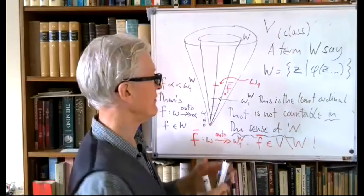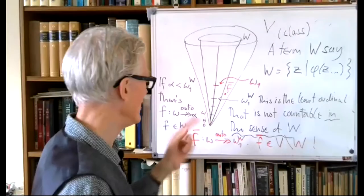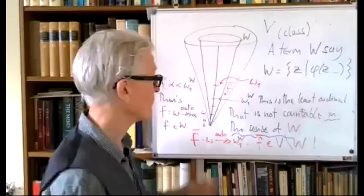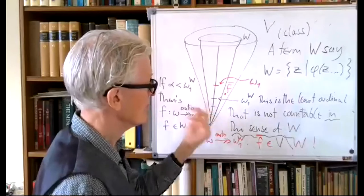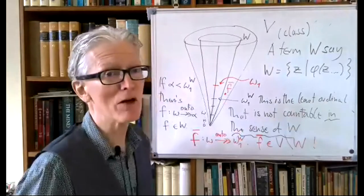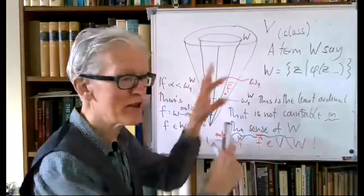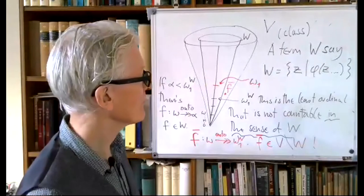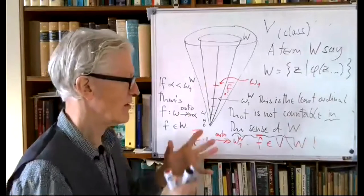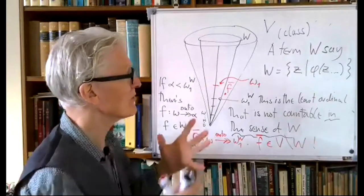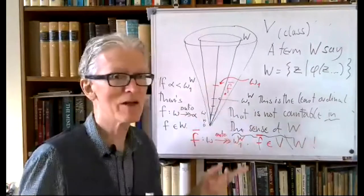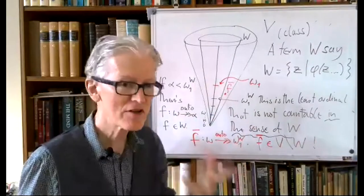Of course the picture could be slightly different: it might be that W had all functions whose domain is ω, in which case ω₁^W would equal the true ω₁. But nothing requires that. So we are going to think about how the truth value of various statements can vary between V and the collection of sets given by term W. This is the theme for today.